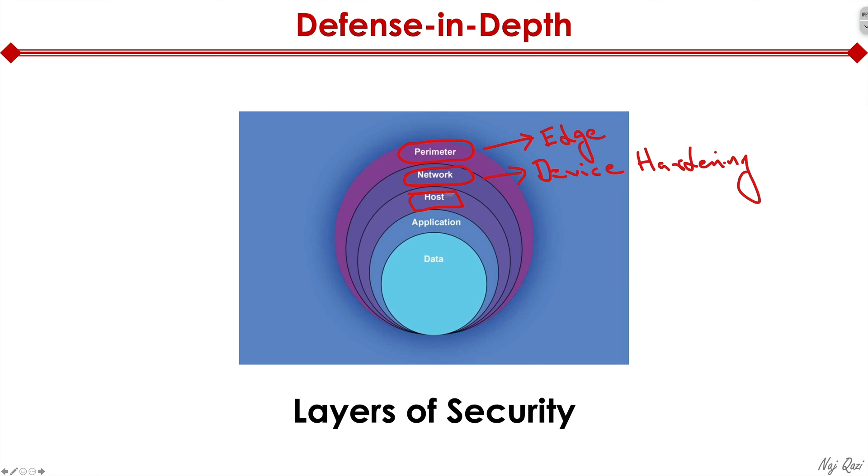Then, when it comes to the host, this could be a server, and it could be anti-virus, anti-malware protection, things like that, to protect the host or the server itself. Then, that server might be running an application. Now, how do we protect that application? Once again, we could use things like anti-virus, anti-malware, different type of mechanisms to protect that application.